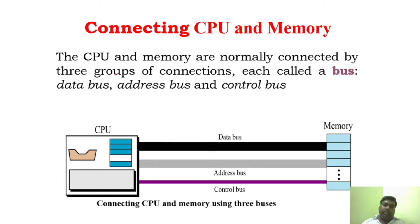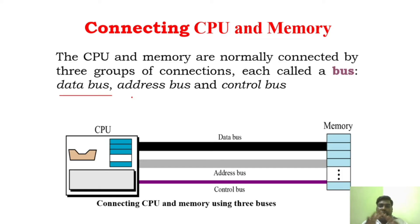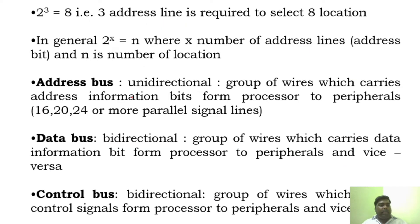Usually there are three types of buses: data bus, address bus, and control bus. From the name itself you can understand — the data bus carries data-related information, the address bus carries address-related information, and the control bus carries control signals. The complete operation inside the computer is carried out by control signals, which are carried by the control bus.